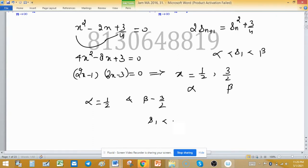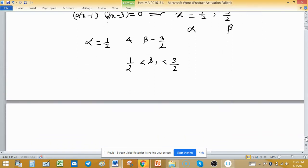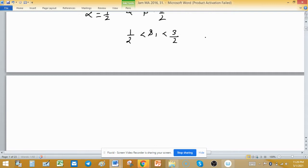First term is given S1 is less than 3 by 2 and greater than half. Now we are checking what about other terms. For S2, S2 will be S1 square plus 3 by 4. Make a square of it, it will be 1 upon 4 less than S1 square less than 9 upon 4 and add 3 by 4 both sides.